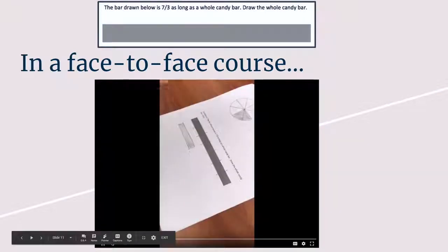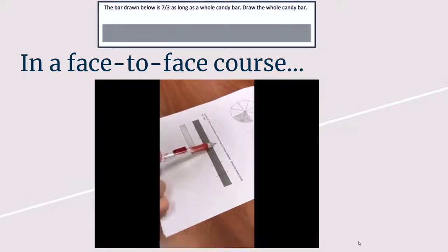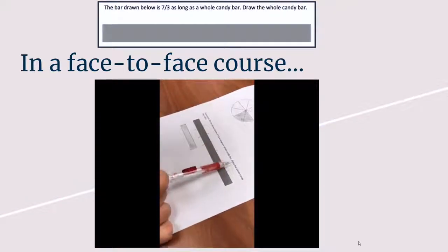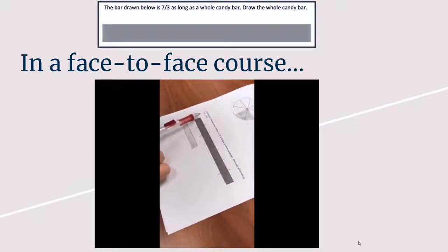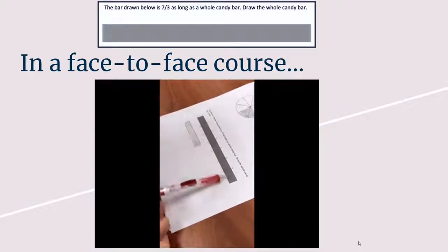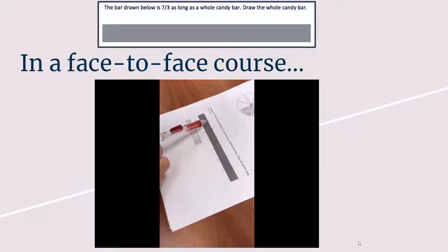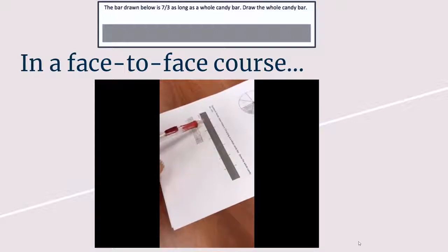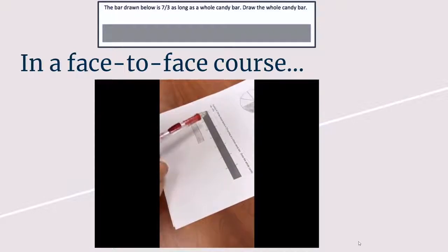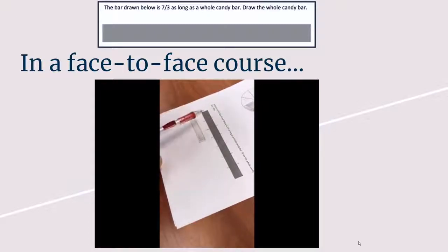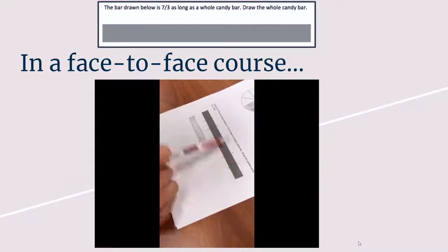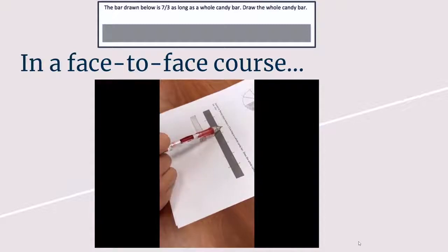The task: 'The bar drawn below is seven-thirds as long as a whole candy bar. Draw the whole candy bar.' So this whole bar represents seven-thirds. What I have done here is partitioned it into seven equal pieces — that represents the numerator. So we need to draw a whole candy bar. A whole candy bar represents three-thirds, which equals one.